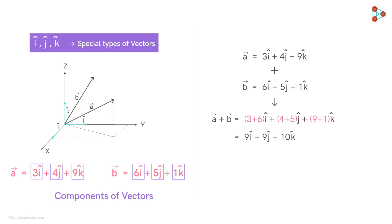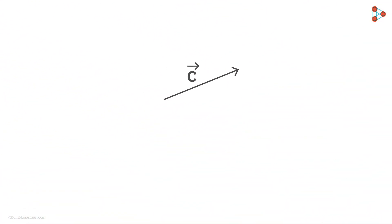Let's move ahead and understand what exactly the components of a vector mean. For this, we will start by understanding what these special vectors are. These are called unit vectors. Consider a vector c represented by this arrow. Now let me ask you a question. What if we multiply this vector by this number 1 over magnitude of vector c? Can you tell me what would be the magnitude and direction of this vector?